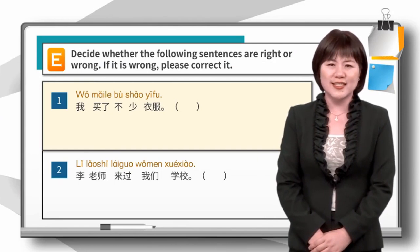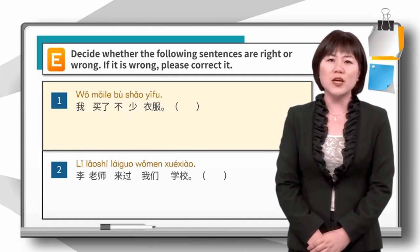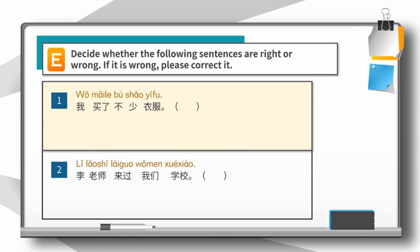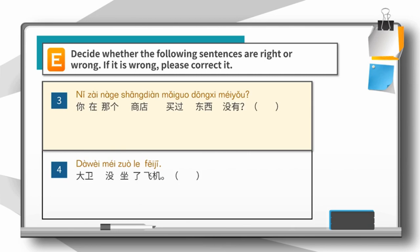Now let's do some exercise. Look at the following sentences and tell me which is right, which is wrong. If it is wrong, correct it. Sentence 1: 我买了不少衣服 — correct. Sentence 2: 李老师来过我们学校 — correct. Sentence 3: 你在那个商店买过东西没有 — correct. Sentence 4: wrong. The correct sentence is 大卫没坐过飞机。